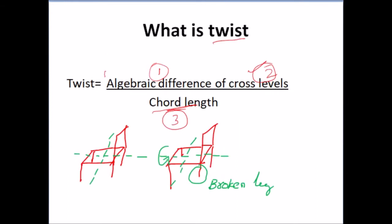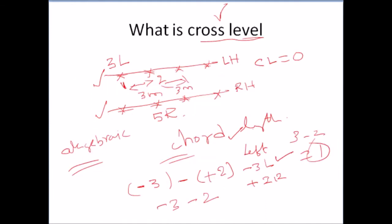Twist is the algebraic difference of cross level divided by chord length. Why is twist important? Consider a chair supported with four legs — it is stable. If there is twist, it is like a chair where one leg is broken or missing. The chair becomes unstable and creates a rotation. This kind of situation is created because of twist in track, so twist is very important.